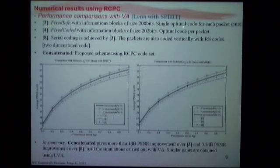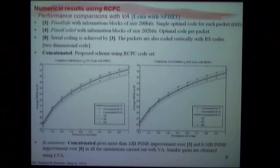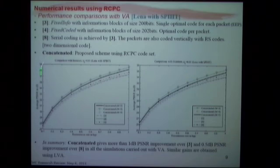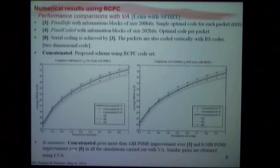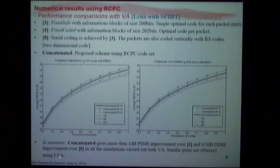I'm comparing my scheme to three references. Reference three is the EEP approach — it uses a single optimal code rate for each packet. Reference four uses optimal code rate per packet as a non-equal protection scheme using a fixed-coded deployment scenario. Reference eight is a product code where serial encoding is achieved along rows, with extra coding vertically using Reed-Solomon codes. These two figures show performance results with average PSNR on the Y-axis and transmission rate in bits per pixel on the X-axis. References three, four, and eight are the blue curves, and the colored plots are the concatenated scheme with increasing M. There is a diminishing returns effect. In summary, the concatenated scheme gives more than 1 dB PSNR improvement over equal error protection and 0.5 dB improvement over the product code.